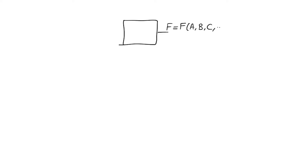So the output is a combinational function — a Boolean combination of the inputs, and that's it. So if we have logic inputs, and if any of the logic inputs change, generally the output will change. It will not change instantaneously; it will take a propagation delay to change.